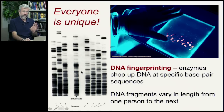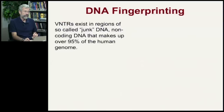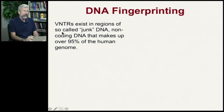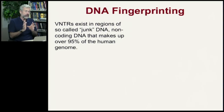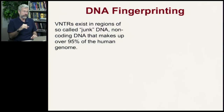Everyone is unique as measured by these DNA fingerprints. These fragments are often abbreviated as VNTRs, and they exist in regions of what we call junk DNA. These are called junk DNA because they don't code for any proteins. We have billions of base pairs, and out of all that long stretch of DNA there are a total of about 25,000 protein-coding regions — but that's not all of the billions of base pairs. There's a lot of sequence that seems to be nonsense.